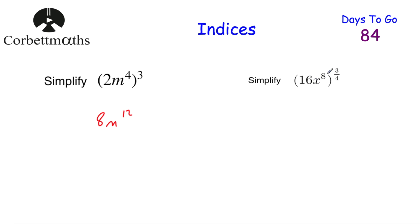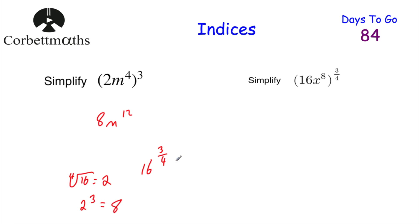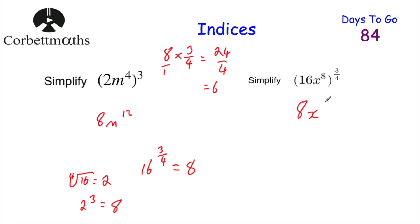Next: simplify (16x⁸) to the power of 3/4. Everything in the bracket is raised to the power of 3/4. First, 16 to the power of 3/4: denominator is 4, so take fourth root of 16 = 2; numerator is 3, so 2³ = 8. Then for x⁸ to the power of 3/4: multiply powers — 8 × 3/4 = 24/4 = 6. So the answer is 8x⁶.